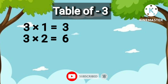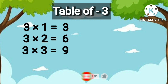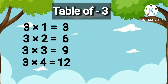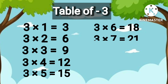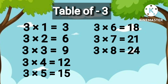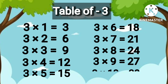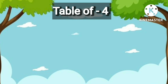3 1's are 3, 3 2's are 6, 3 3's are 9, 3 4's are 12, 3 5's are 15, 3 6's are 18, 3 7's are 21, 3 8's are 24, 3 9's are 27, 3 10's are 30. Table of 4.